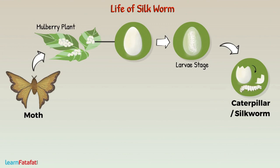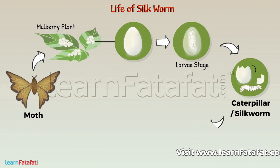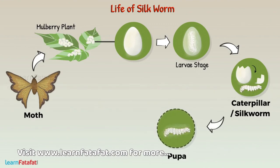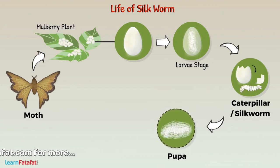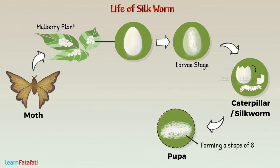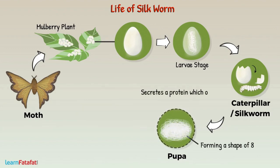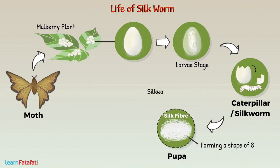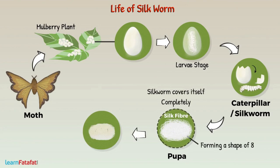The silkworm feeds on the leaves of the mulberry plant. When it grows and is ready to enter the next stage of its life cycle called pupa, it starts weaving a net around itself. It then swings its head from side to side, forming a shape of eight. While doing so, the silkworm secretes a protein which, on exposure to air, becomes hard. This is the silk fiber.